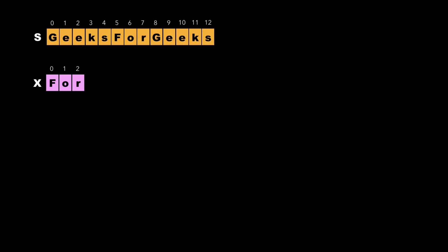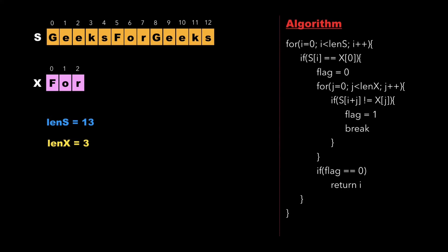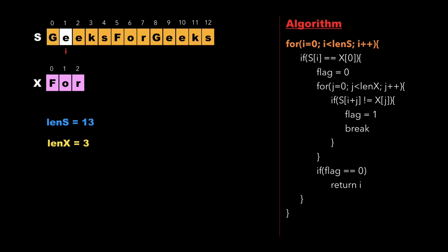Now let's look at the approach to solve this problem. Consider the same example where string s is 'geeks for geeks' and string x is 'for'. Two variables, length_s and length_x, store the lengths of strings s and x respectively. We begin by traversing string s from i equals zero to its length, and at each step we check whether s[i] equals the first character of x. Since 'g' is not equal to 'f', we increment i.